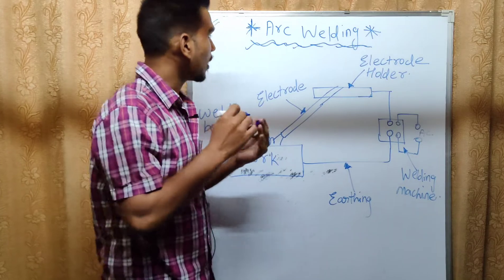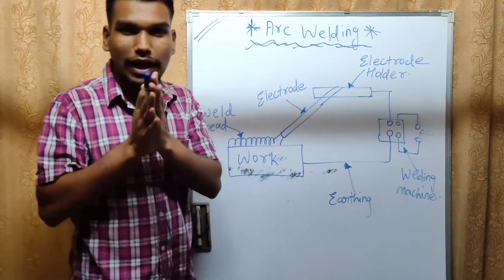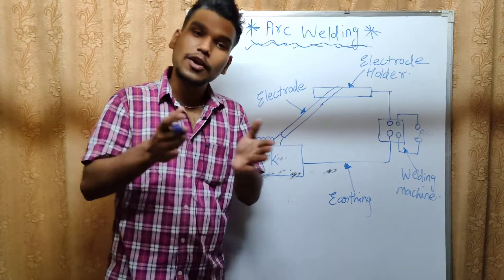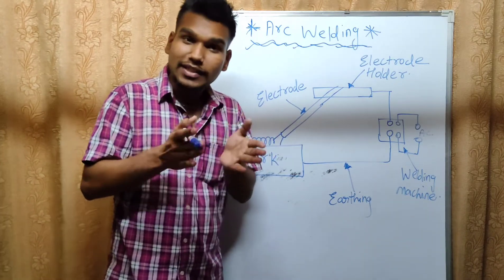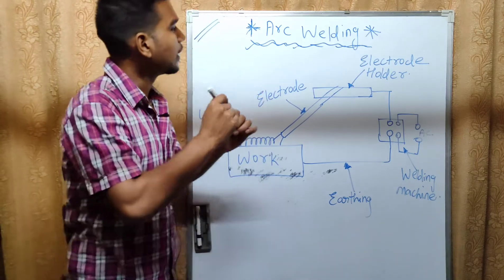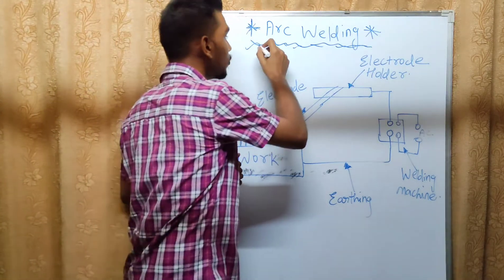What is arc welding? Here is electric arc welding where we are giving AC and DC voltage supply. We are talking about AC and DC voltage.